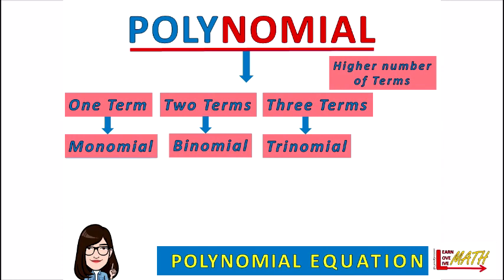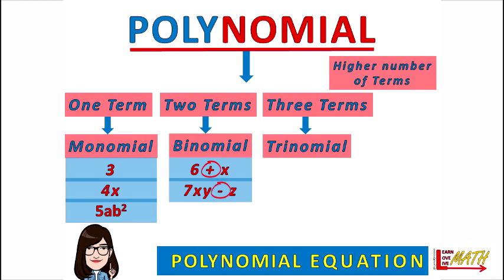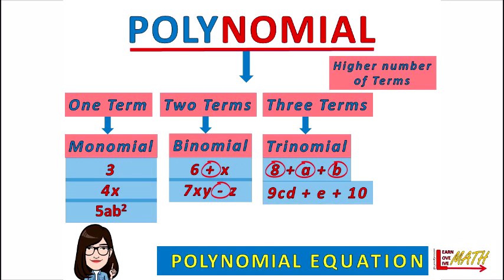Let us look at a few examples. Three, four x, and five ab-squared are monomials and also polynomials. Examples of binomials are six plus x, and seven xy minus z — the plus and minus signs separate the terms. An example of a trinomial is eight plus a plus b, which has three terms. Another example is nine cd plus e plus ten. You can use any letters of the alphabet.